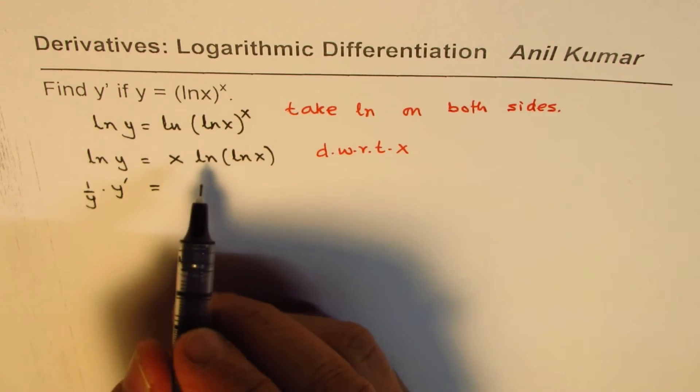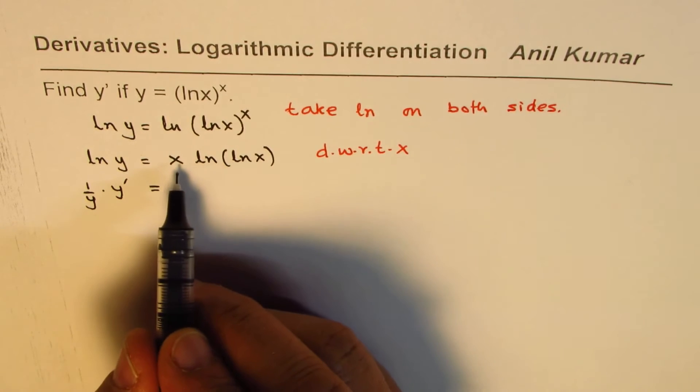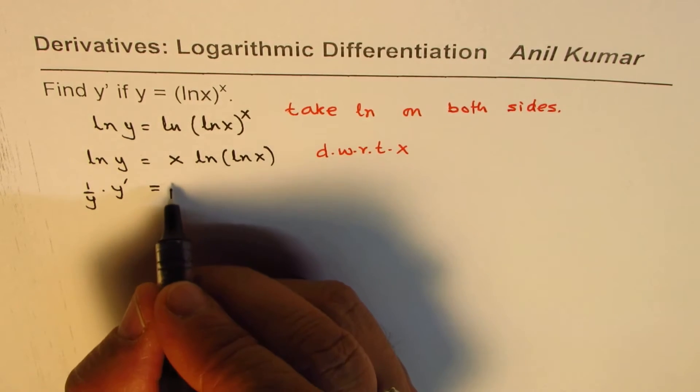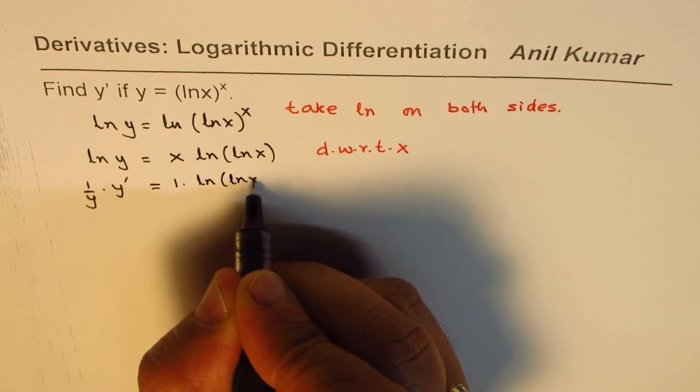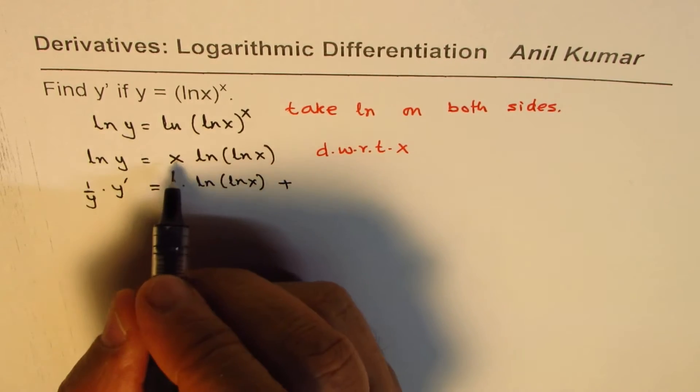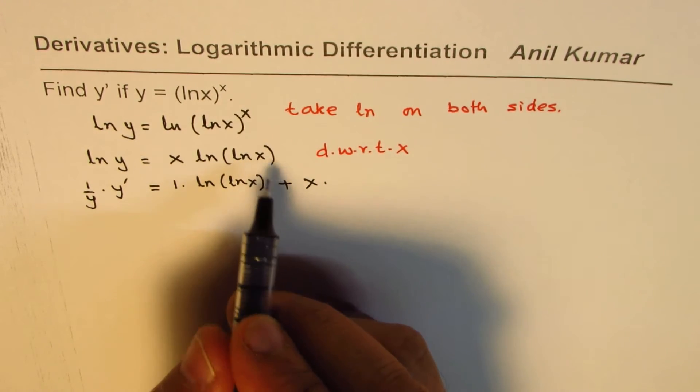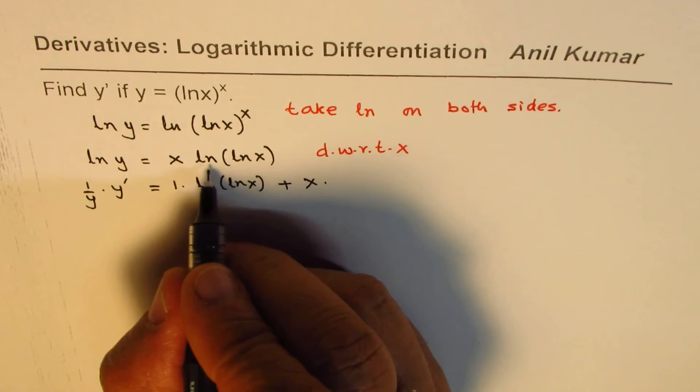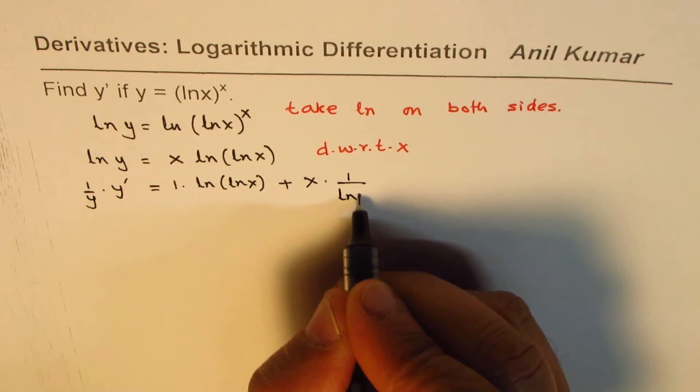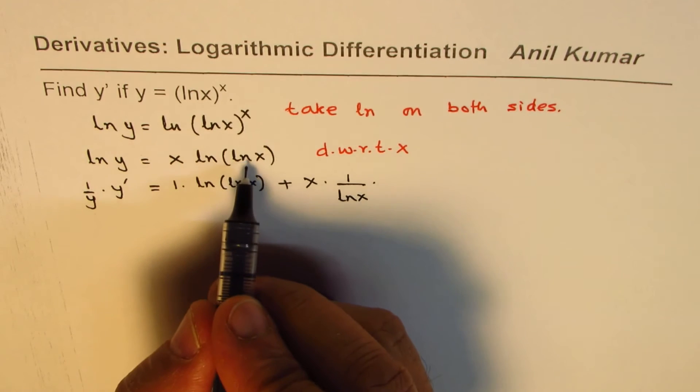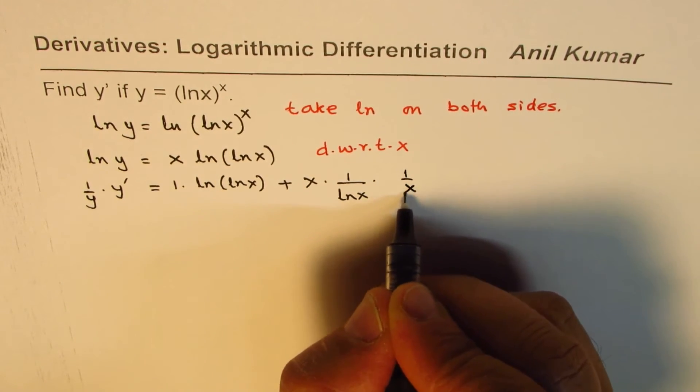Now here you can apply the product rule. Derivative of x is 1 so we get 1 times ln ln x plus x times derivative of ln ln x. So that should be 1 over ln x times derivative of inside function which is 1 over x.